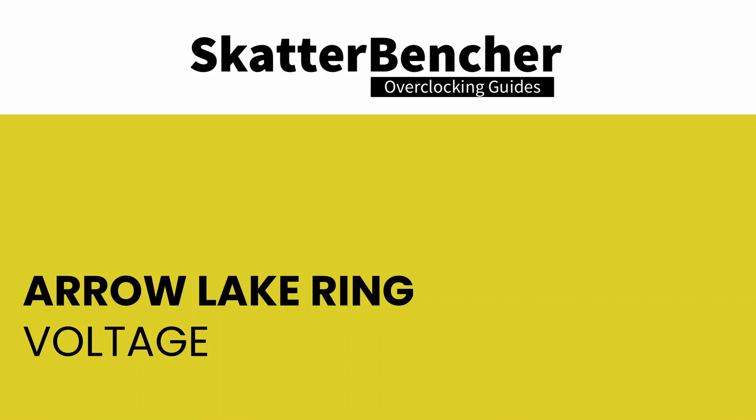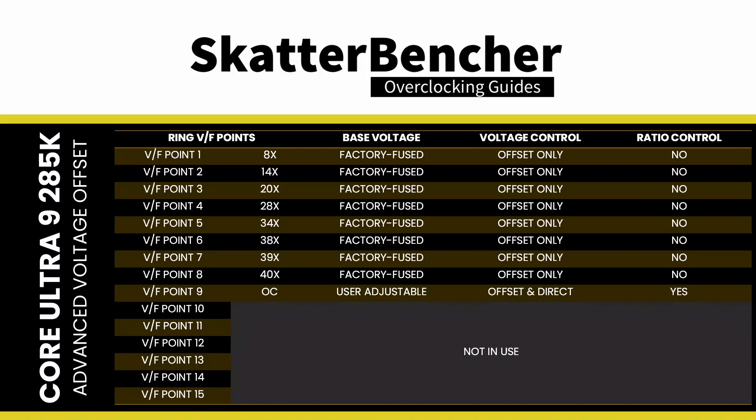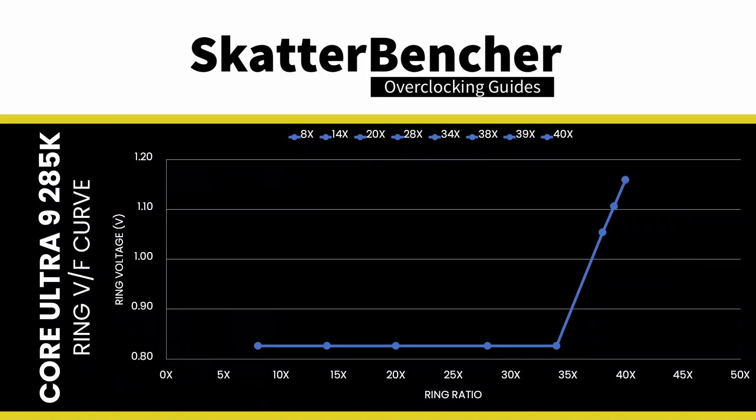The voltage regulation of the ring is substantially different on Arrow Lake compared to Raptor Lake, because of the introduction of the DLVR. The DLVR basically allows for lower operating voltages, but it still relies on a dynamic external motherboard voltage regulator as its voltage source. The ring has its own VF curve, defined by up to 9 VF points. The first 8 VF points are factory fused, and the last point is mapped to the so-called OC ratio. Here's the ring VF curve for my specific Core Ultra 9285K: the voltage is 0.826V between 8x and 34x, then increases to 1.054V for VF point 6 at 3.8 GHz and 1.106V for VF point 7 at 3.9 GHz.